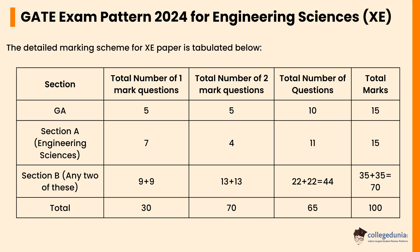Let's check the GATE exam pattern 2024 for Engineering Sciences. The paper is divided into three sections: General Aptitude, Section A (Engineering Mathematics), and Section B. General Aptitude has 10 questions carrying 15 marks; Section A has 11 questions carrying 15 marks; Section B has 22 questions carrying 35 marks each. The subjects under Section B include: Fluid Mechanics, Material Science, Solid Mechanics, Thermodynamics, Polymer Science and Engineering, Food Technology, and Atmospheric and Oceanic Sciences.